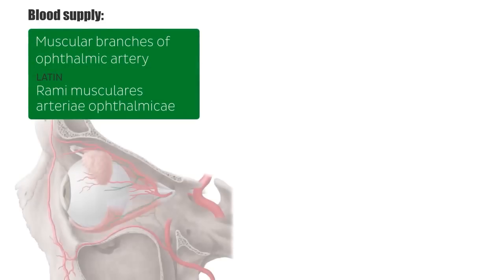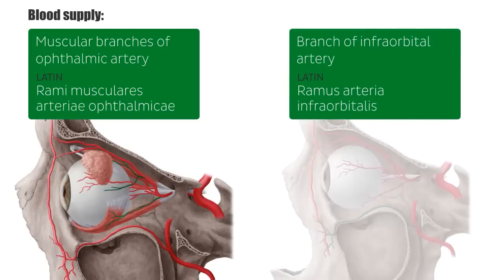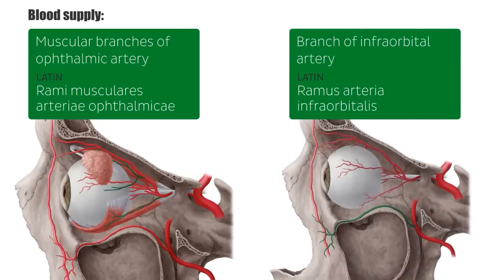Arterial blood supply to the inferior rectus is provided by muscular branches of the ophthalmic artery, shown in green, and specifically the branches running inferiorly. Additionally, the inferior rectus muscle receives a branch of the infraorbital artery, highlighted in green in the image.